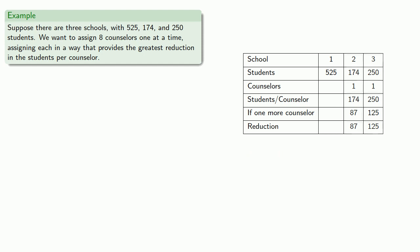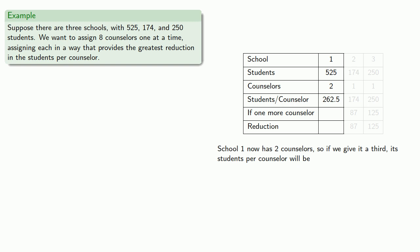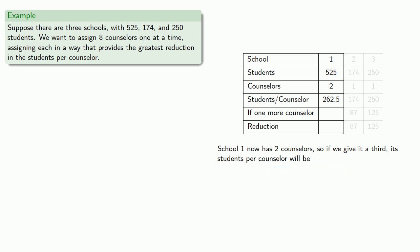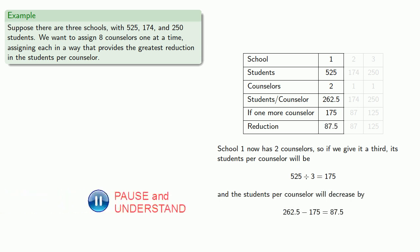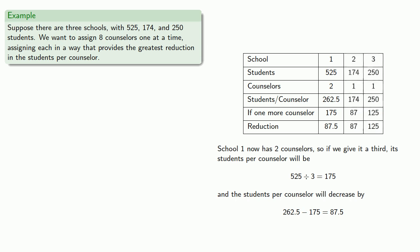Let's focus on School 1 for a moment. It now has two counselors, and we've already computed the number of students per counselor. Since School 1 has two counselors, if we give it a third, the students per counselor will decrease by a certain amount. We've only assigned four of the total eight counselors, so we choose a school for the next counselor, and the greatest reduction will occur if we assign the next counselor to School 3.